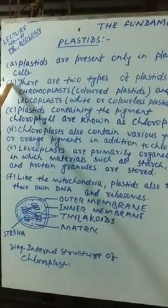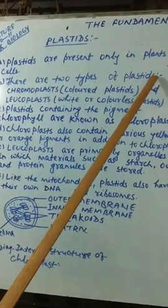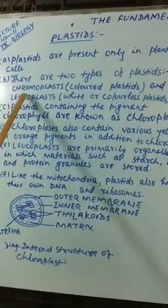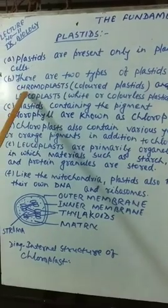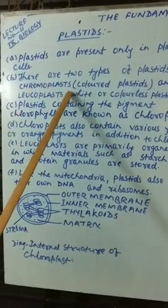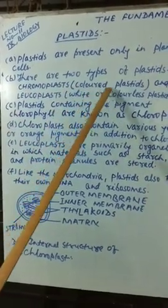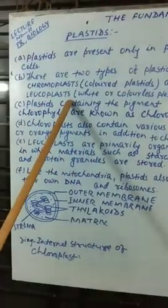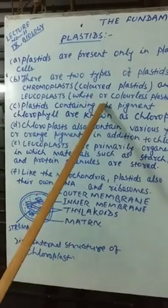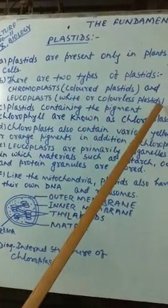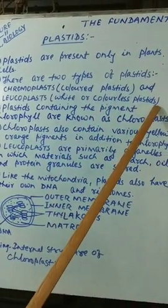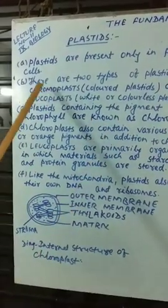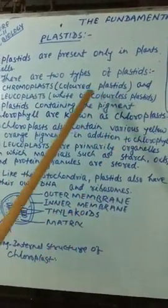Second point: there are two important types of plastids. Chromoplast, that is also called colored plastids. And leucoplast, that is also called white or colorless plastids. According to your standard, you should know these two types of plastids.